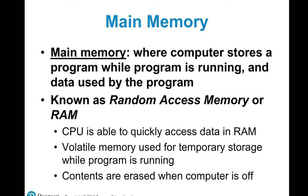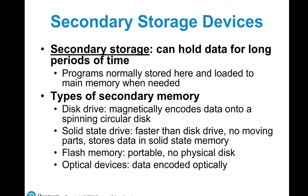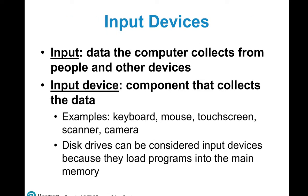Main memory is RAM — random access memory — which is able to quickly access data. For example, if you have a program saved to computer memory, every time you start up it remembers where it's at. Secondary storage has evolved: in the past people would hook up a second hard drive, but nowadays thumb drives can hold a terabyte of data. Input is data the computer collects from people or other devices — for example, allowing a user to enter values in a Python program. Input devices include keyboards, mice, touchscreens, scanners, and cameras.